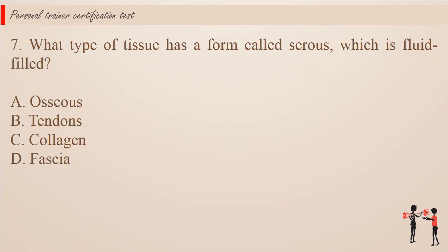Question 7. What type of tissue has a form called serous, which is fluid-filled? a. Osseous. b. Tendons. c. Collagen. d. Fascia.